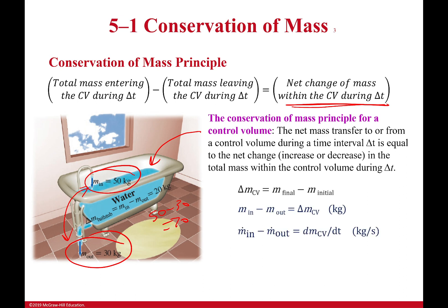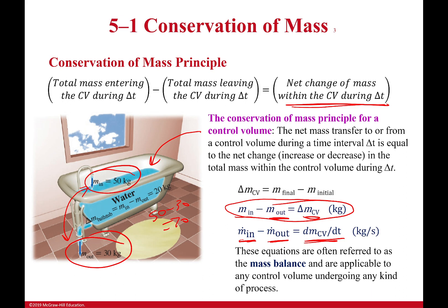Here it is written out more formally. We have the basic form looking at masses themselves, but a lot of times with a steady state system we deal with mass flow rates: mass flow rate in minus mass flow rate out equals the change in mass of the control volume with time — how quickly is the mass in the control volume changing? These are referred to as mass balance equations, and they work for any control volume undergoing any kind of process, because no matter what you do, mass can't disappear — it has to go somewhere.